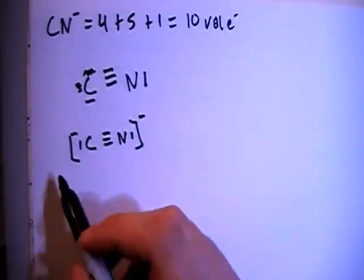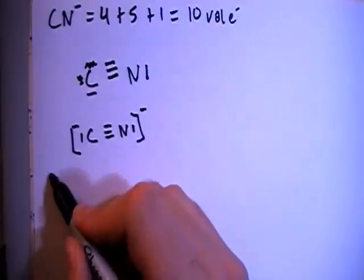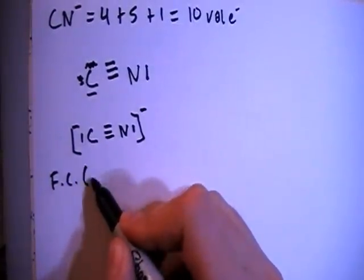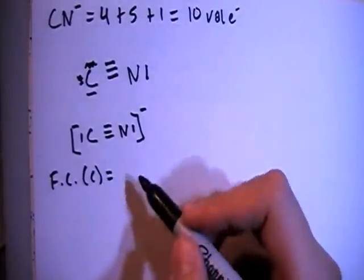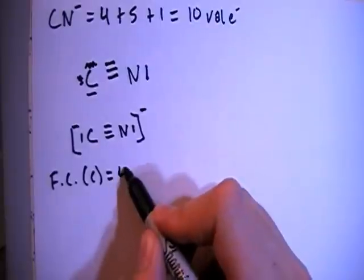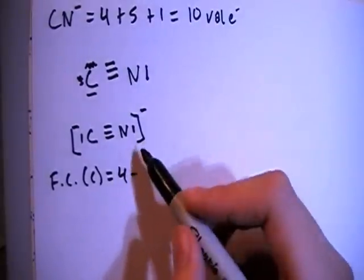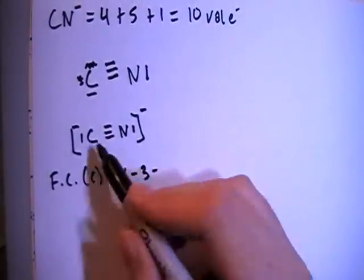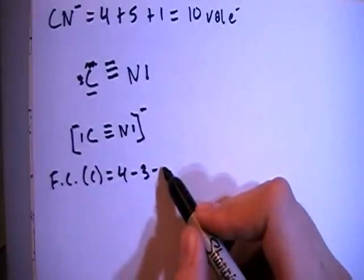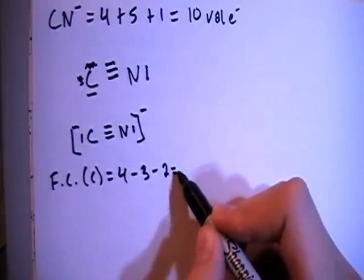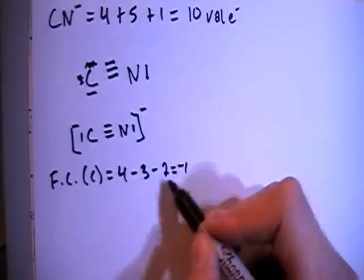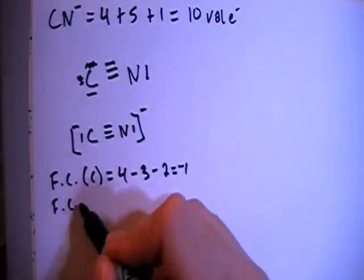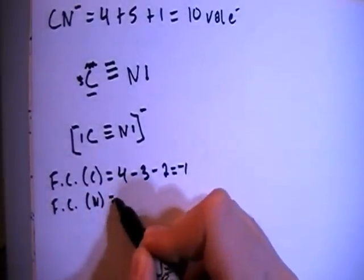So now we can do the formal charges just to verify. Formal charge of the carbon is equal to four valence brought in minus the one, two, three bonds minus two non-bonding for a formal charge of negative one.